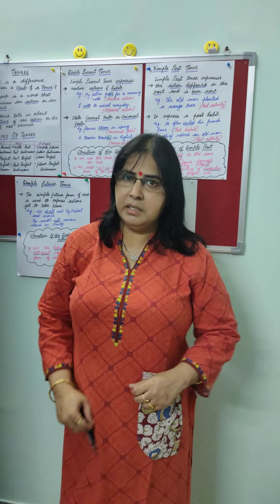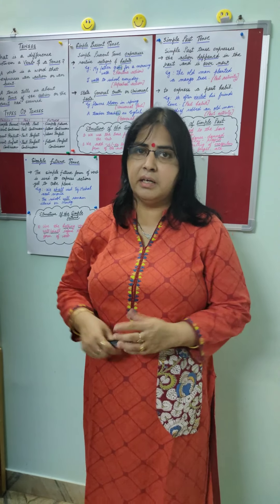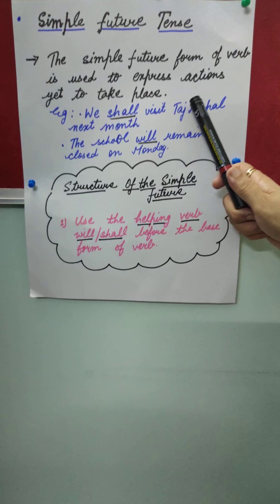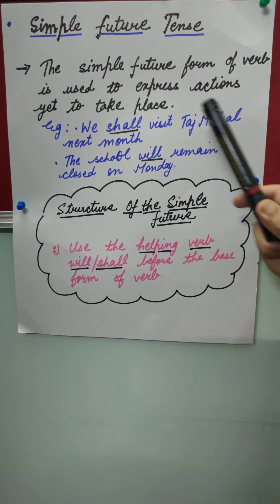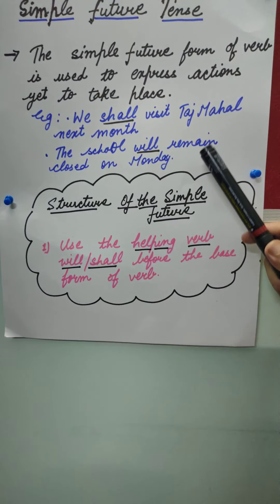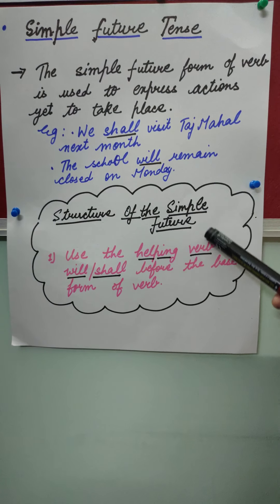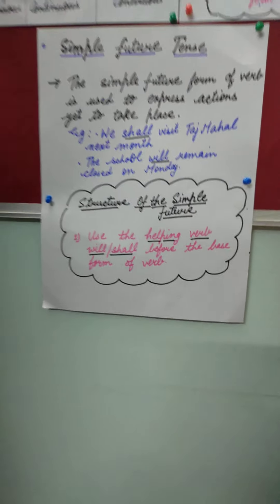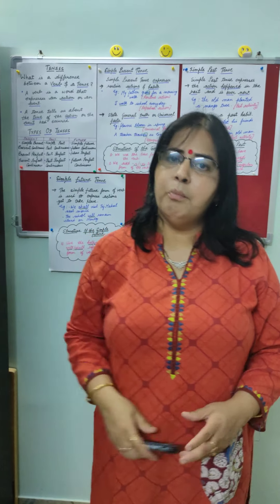The third simple tense is simple future tense — a very easy tense. It refers to some action which is yet to take place; the action hasn't happened yet. Simple future form of verb is used to express actions yet to take place. For example, 'We shall visit Taj Mahal next month,' and 'The school will remain closed on Monday.' The structure of simple future tense: we use the helping verb 'will' or 'shall' before the base form of the verb.